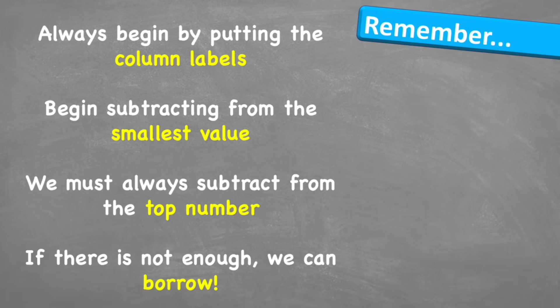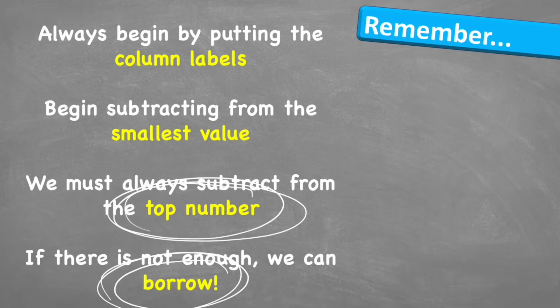Let's look at what to remember. First, we must always begin by putting the column labels. Begin subtracting from the smallest value. And we must always subtract from the top number. This is really important. Remember, the top number is the number we have, and the bottom number is what we're subtracting away. If there is not enough, we can borrow from next door. Don't be afraid to knock next door and borrow.